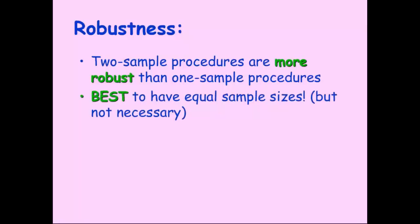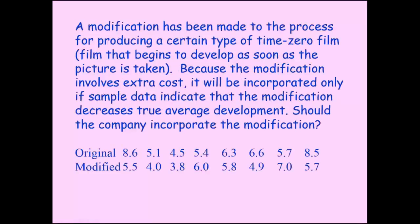It's best if we're trying to show robustness that we have equal sample sizes. But for a two sample independent process, it's not necessary, and that's kind of the dead giveaway that we're dealing with two independent samples is that the sample sizes actually aren't the same.